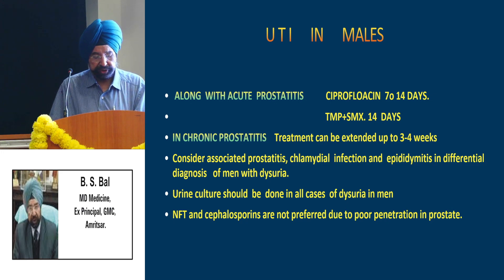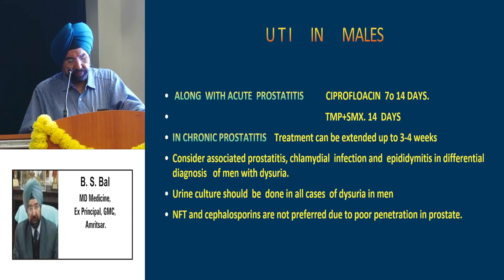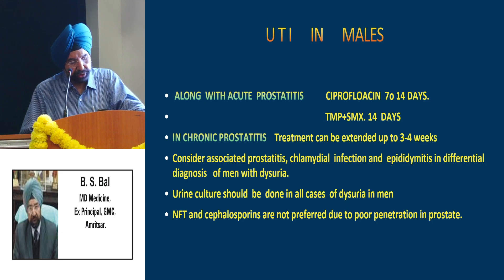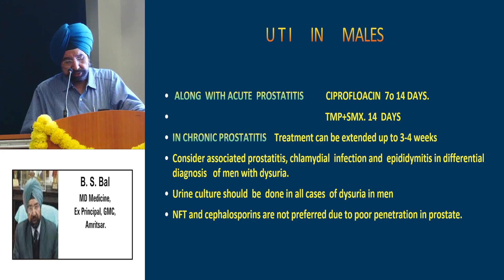For UTI in men, in chronic prostatitis the treatment length can be increased up to 4 weeks. Consider associated prostatitis, chlamydial infection and epididymitis in the differential diagnosis of men with dysuria — sometimes doxycycline BD for 14 days needs to be added. Urine culture should be done in all cases of dysuria in men. Nitrofurantoin and cephalosporins are not preferred because they penetrate very poorly into the prostate.